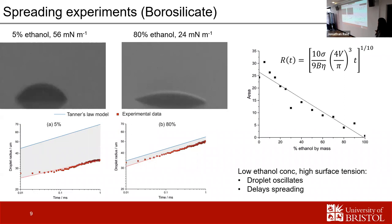Looking at the area between the experimental data and the model across all concentrations, the gap was reduced with increasing ethanol concentration. To summarize: low ethanol concentrations have high surface tension, causing the droplets to oscillate and delay spreading, as seen in the 5% example.